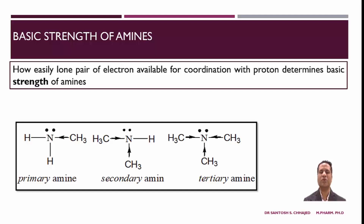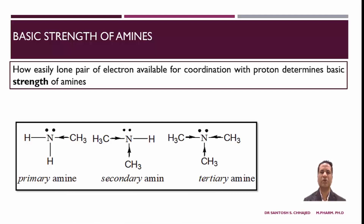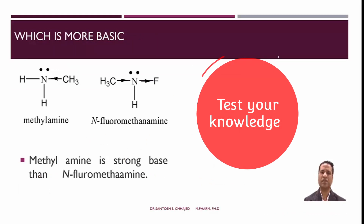In the case of a secondary amine, two methyl groups release electrons onto the nitrogen, providing more stability through dispersion of positive charge. As a consequence, the nitrogen of a secondary amine shares electrons faster than that of a primary amine. In a tertiary amine, three alkyl groups perform the same function, and the inductive effect of three methyl groups makes the positively charged nitrogen more stable. Therefore, due to the inductive effect of alkyl groups, a tertiary amine is more basic than a secondary amine, and a secondary amine is more basic than a primary amine.